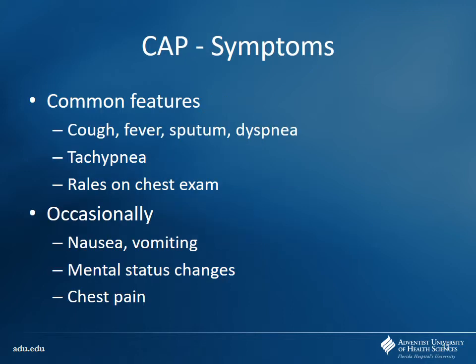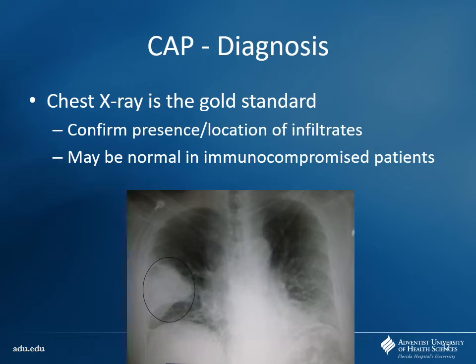Common features of pneumonia include cough, fever, sputum production, dyspnea, and tachypnea. In elderly patients you can see mental status changes - is it their dementia worsening, or a bacterial infection? Chest pain can also occur. The gold standard for diagnosing pneumonia is the chest X-ray, which can confirm the presence of infiltrates and look for things like atelectasis.